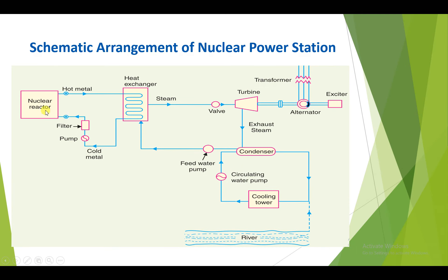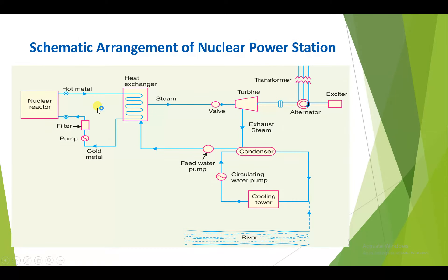We have a nuclear reactor, then a heat exchanger, turbine and alternator, and then a transformer. Below we have a condenser and cooling tower, and a circulating water pump. We will now study the important parts of this nuclear power station.